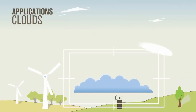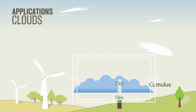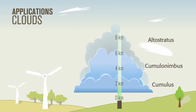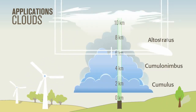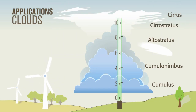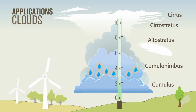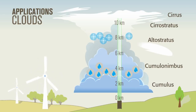MPL determines cloud height, extent, and structure with extreme accuracy. Cloud height and multiple cloud layers can be detected from the ground to the upper troposphere. With two detection channels to measure different polarizations of the backscattered signal, MPL can determine whether clouds contain liquid, ice, or both.